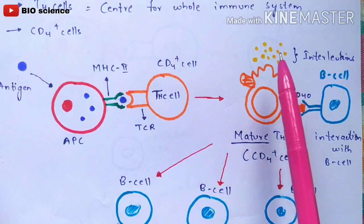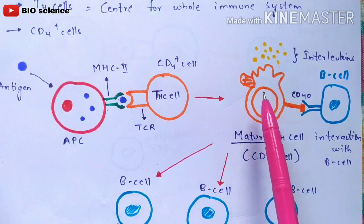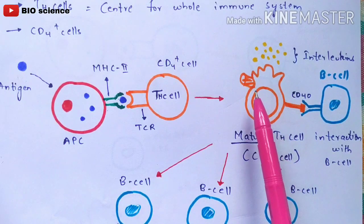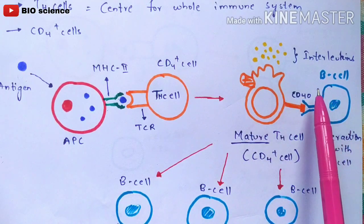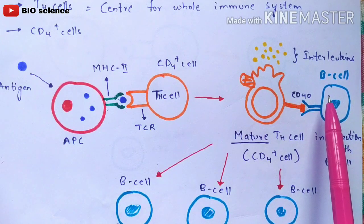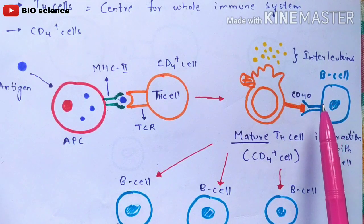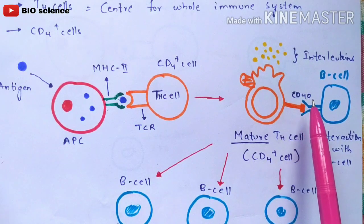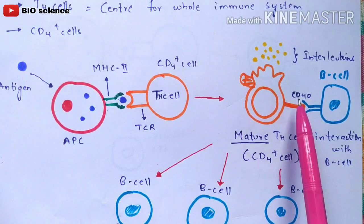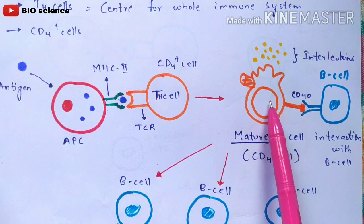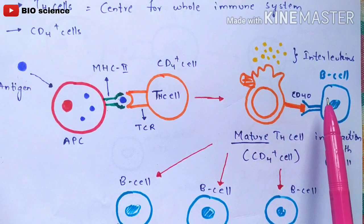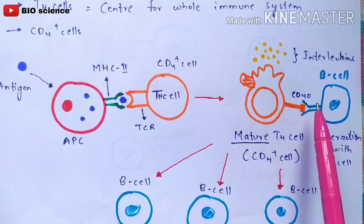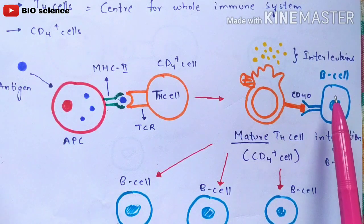The mature T helper cell then binds to a B cell. The B cell has CD40 ligands on its surface, and the interaction between the mature T helper cell and the B cell occurs via these CD40 ligands.